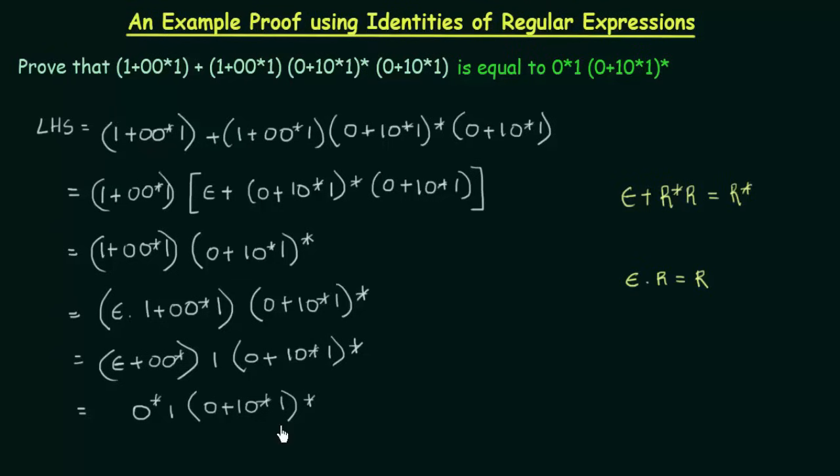Now we are getting this. And if you check it with the RHS, it is exactly the same. 0*1(0+10*1)*. This is equal to our RHS. So this is how we prove these expressions. And this is how you have to use the identities in order to solve these kind of questions if you get. I hope this was clear to you. Thank you for watching and see you in the next one.